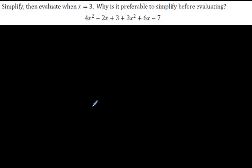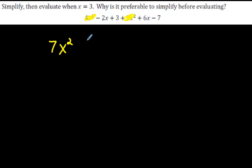This next one says simplify, then evaluate. Let's start by simplifying. 4x squared plus 3x squared is 7x squared. We have negative 2x and 6x — negative 2 and 6 make positive 4x. Then 3 and negative 7 give us negative 4. We've simplified it and put it in descending order. Now evaluate when x equals 3 — wherever we see an x, we put a bracket with 3 inside.